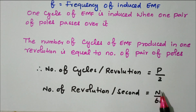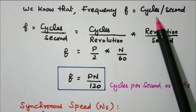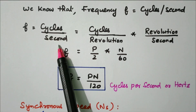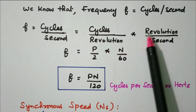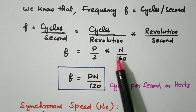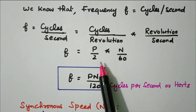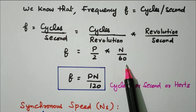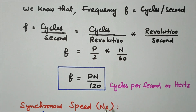The number of revolutions per second is N/60. Since frequency f = cycles per second, we write: f = (cycles per revolution) × (revolutions per second) = (P/2) × (N/60) = PN/120. So f = PN/120 hertz, where P is the number of poles and N is the speed in RPM.